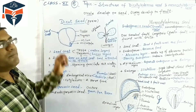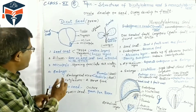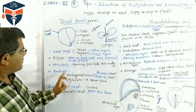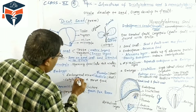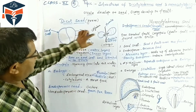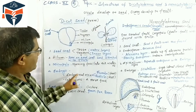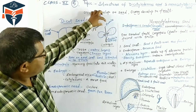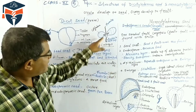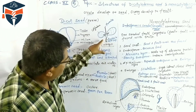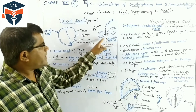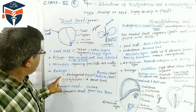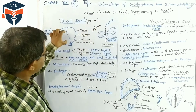The seed contains a baby plant called the embryo, which is present inside the seed. The embryo of the dicot seed has one embryonal axis and cotyledons. The embryonal axis consists of the plumule at one end and the radicle at the other end. After development, the plumule develops into the shoot and the radicle develops into the root. The radicle has a cap-like structure called the root cap which protects it.